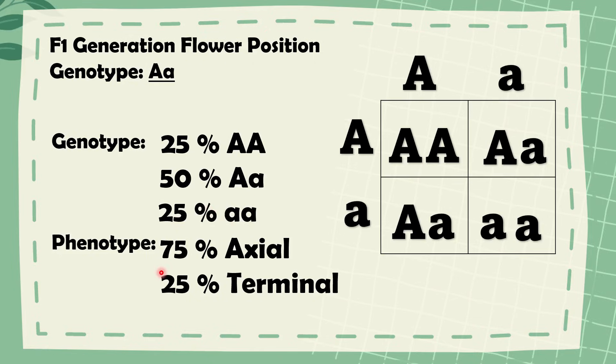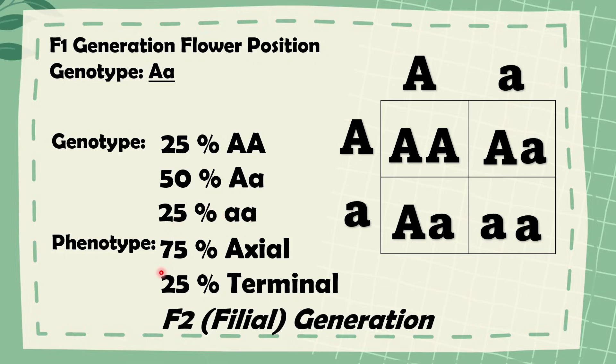And that is the answer — this is an example of the F2 or second filial generation. That is how you predict phenotypic expressions of traits following simple patterns of inheritance. Thank you so much for watching. I hope you learned something new today.